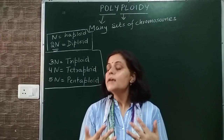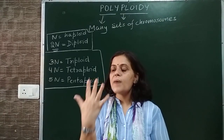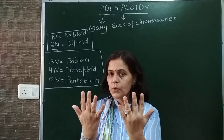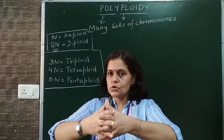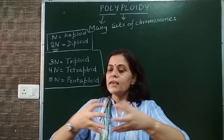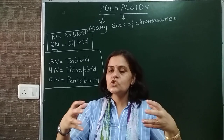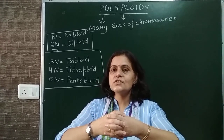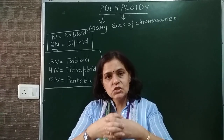How does non-disjunction happen? Suppose there is a cell having two sets of chromosomes, each set having five chromosomes - two sets of five chromosomes each. When meiosis occurs in this cell, these chromosomes cross over. These chromosomes are homologous to each other - they cross over. When they come together, that is called a junction. And when they separate from each other, that is disjunction. But if this disjunction does not happen - that is non-disjunction. They remain together; they met once but did not separate.